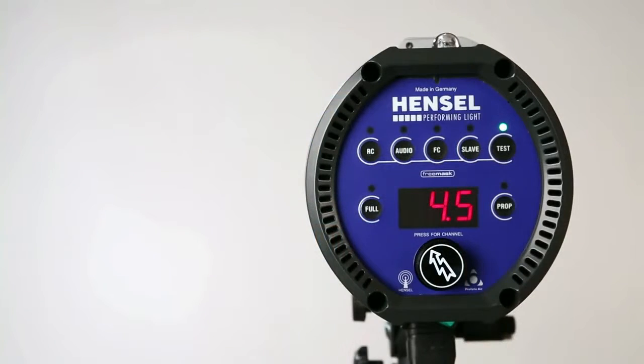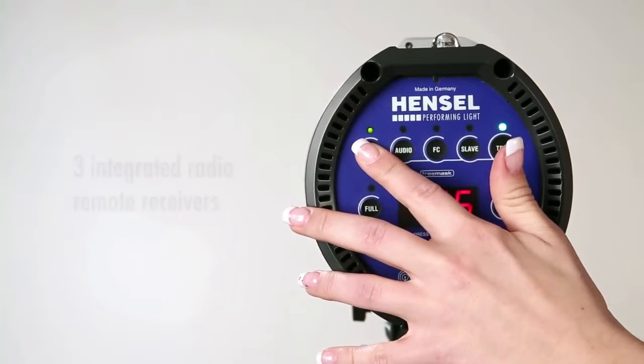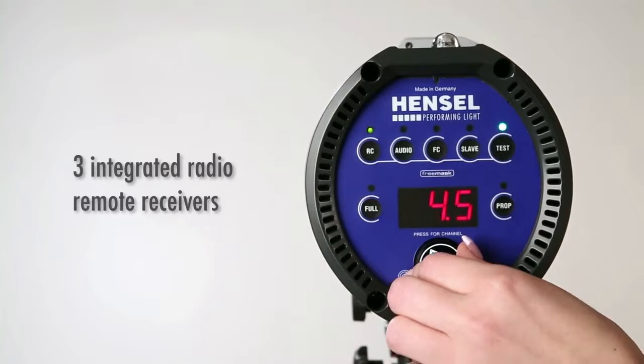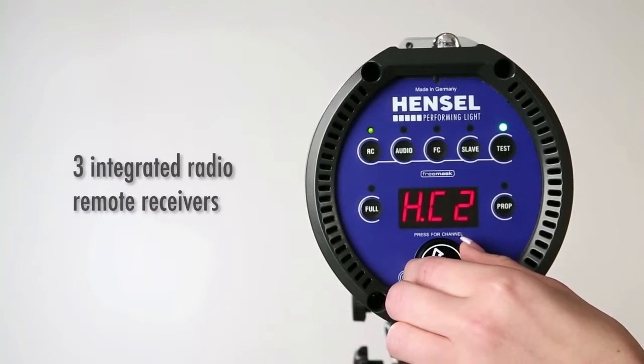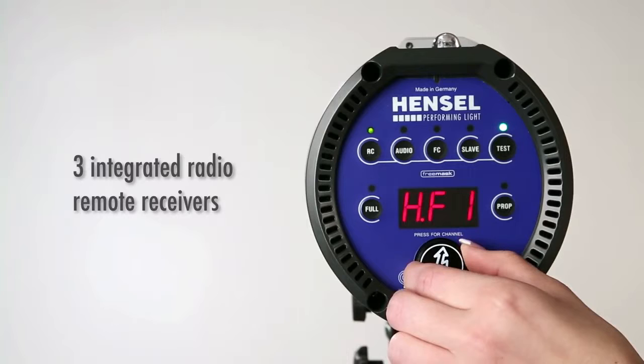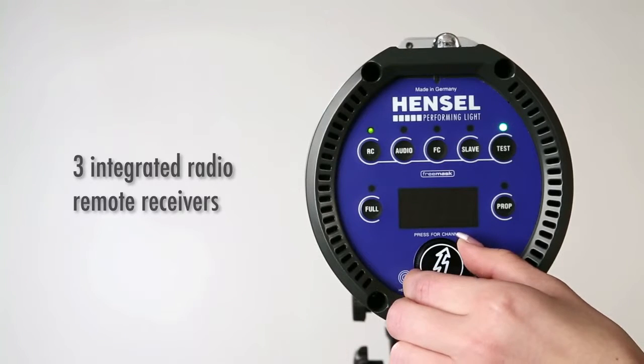Press the RC button to activate the built-in remote radio receivers. Press and then turn the digital turning knob to select radio channels. This is also where the freemask channels can be selected.